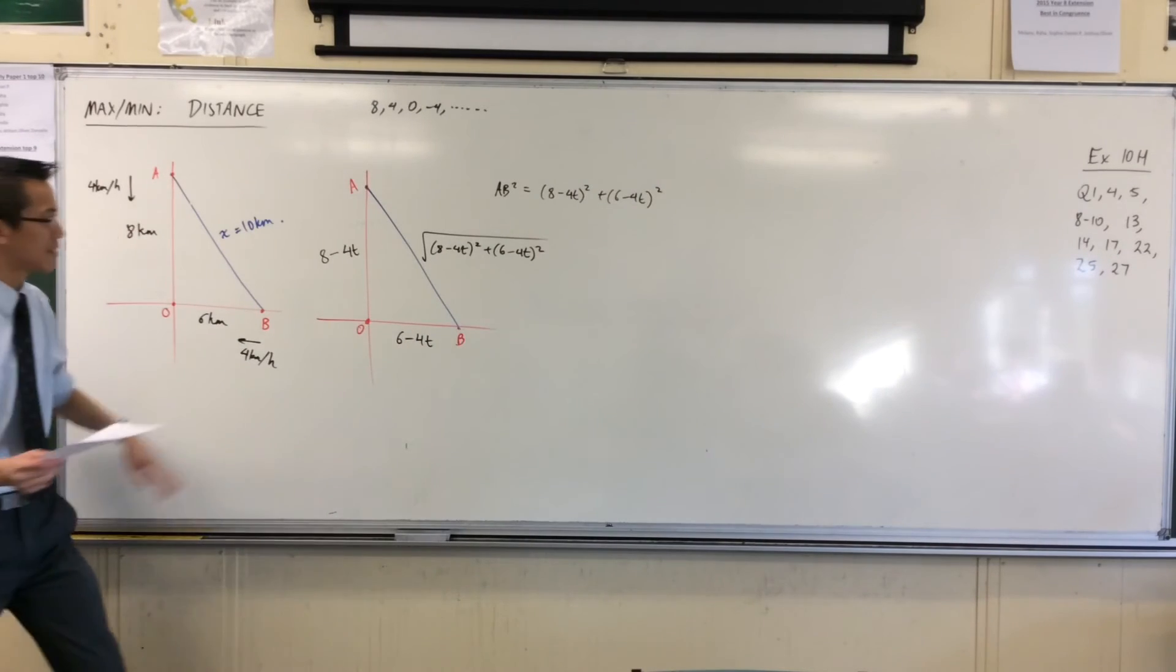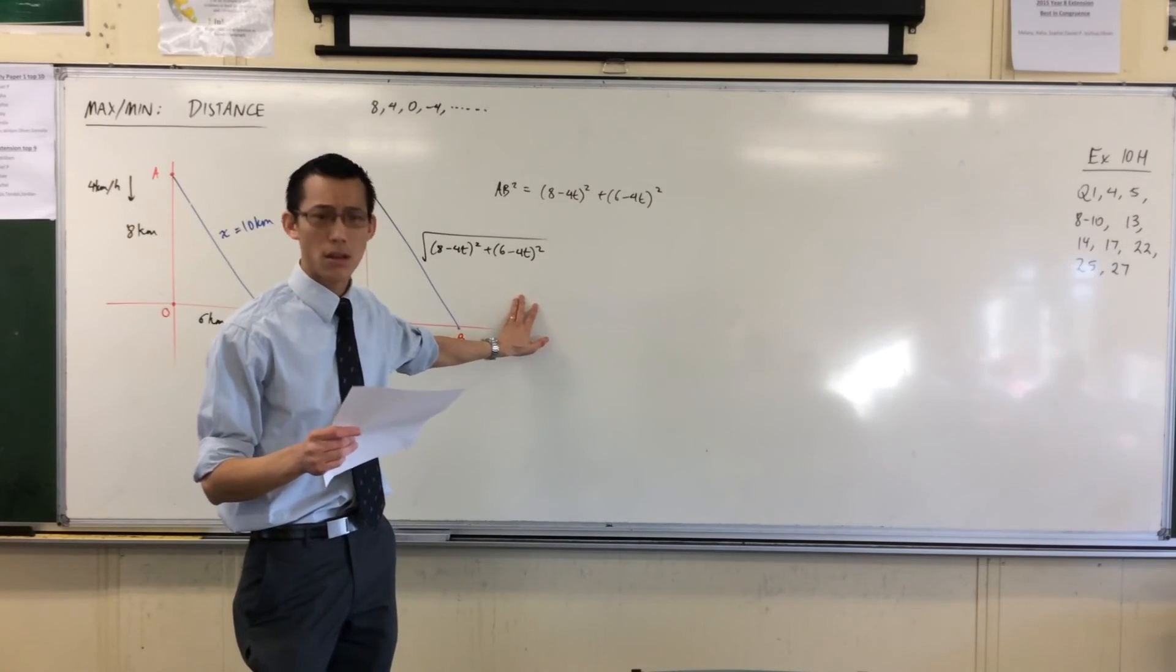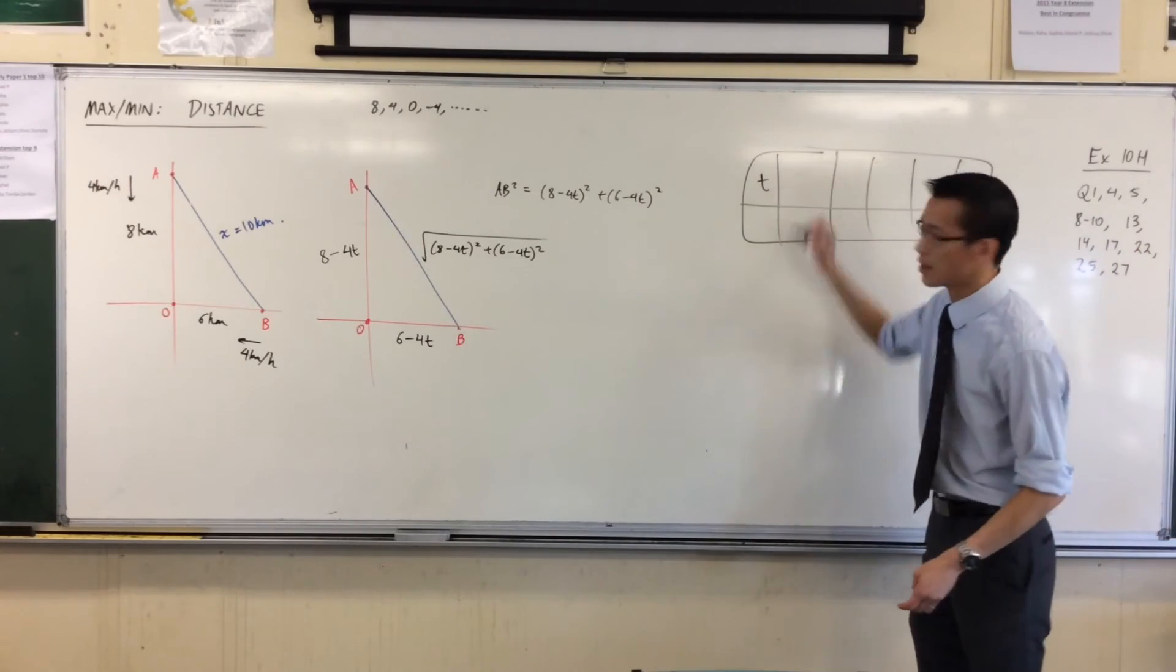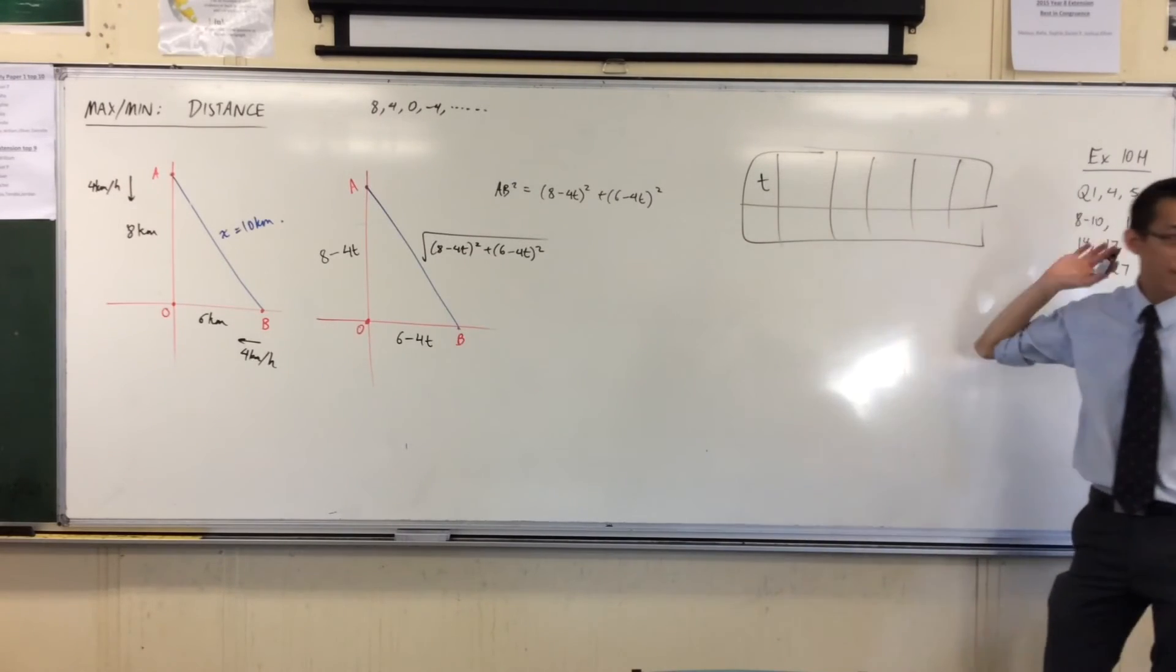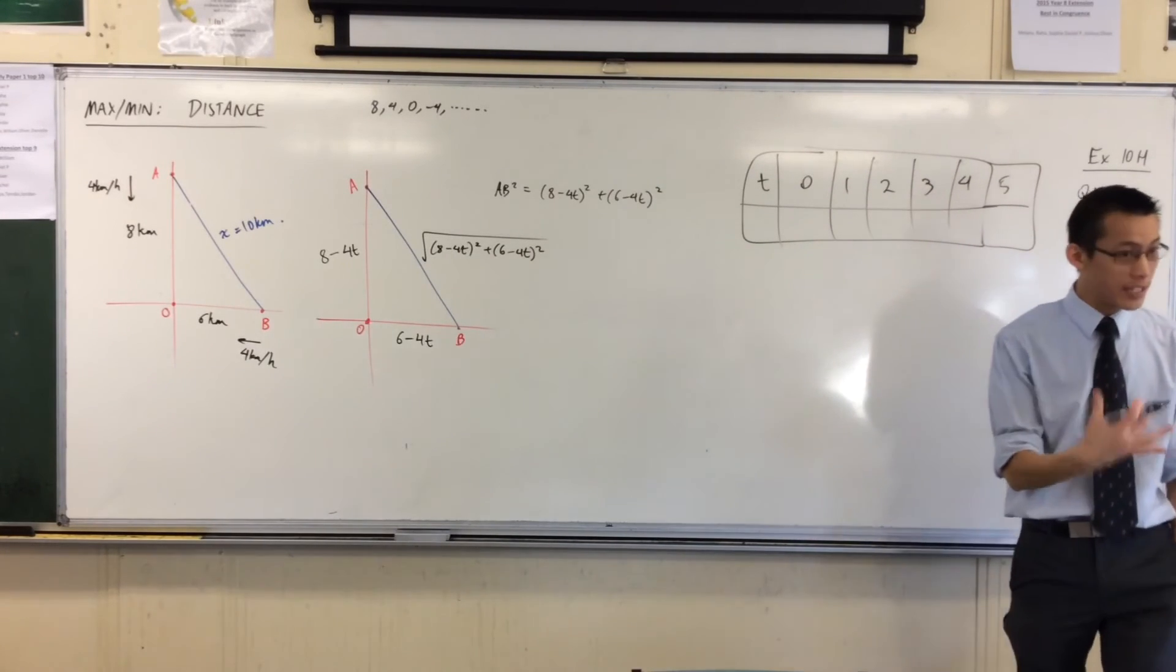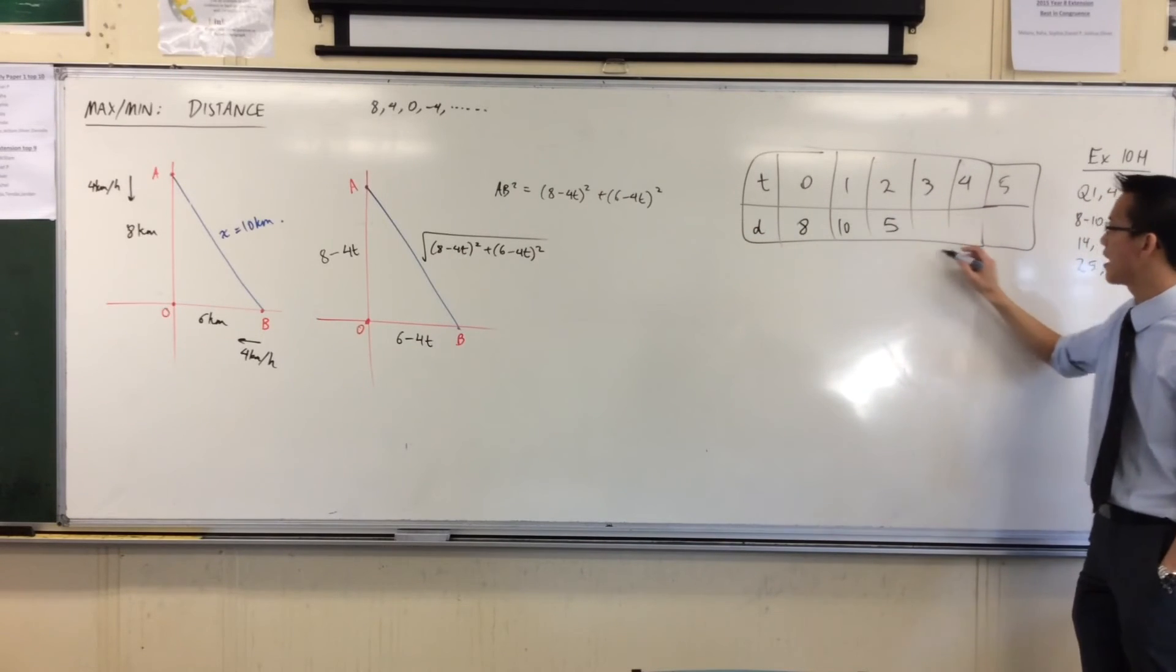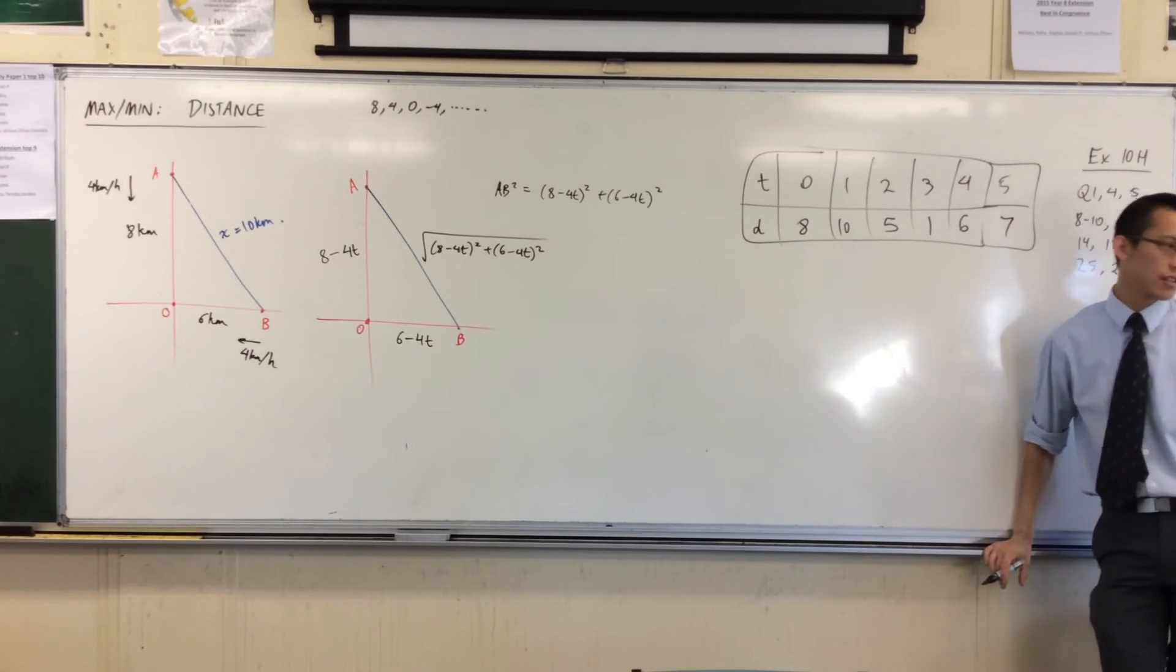So let's think about this. If I gave you a table of values and I said, at a certain time, what's your distance away from a point like the origin? Suppose I have some weird function here where according to time progressing, your distance just fluctuates all over the place. So suppose the distance starts off at, imaginatively, 8, then it goes up to 10, then it goes down to 5, then up to 6 and 7. If you have some values, you don't need to differentiate to work out where the minimum is—it's right there.